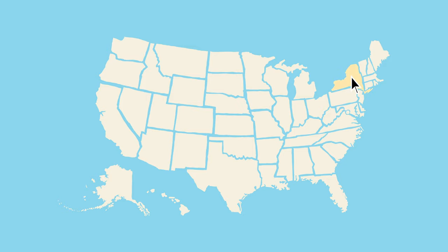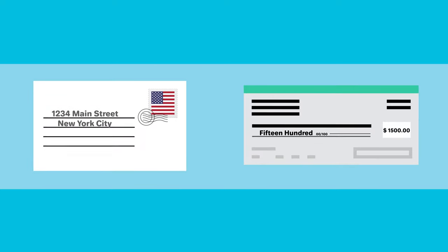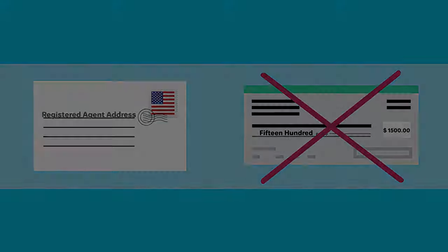And with that, you will have formed a New York LLC on your own. Keep in mind, however, that New York's newspaper publication requirements can cost $1,500 or more if your LLC's principal address is in New York City. To reduce publication costs, entrepreneurs have developed various strategies. A registered agent service located outside the city allows an LLC to use the registered agent's address as the principal address, which greatly reduces the cost of publication.